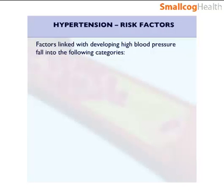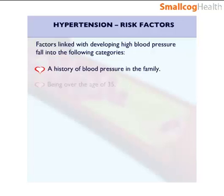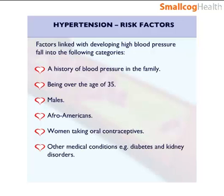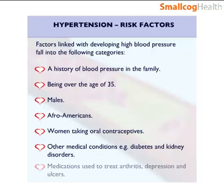Recognised factors linked with developing high blood pressure fall into the following categories: a history of blood pressure in the family; being over the age of 35; males; Afro-Americans; women taking oral contraceptives; other medical conditions, for example diabetes and kidney disorders; and medications used to treat arthritis, depression, and ulcers.